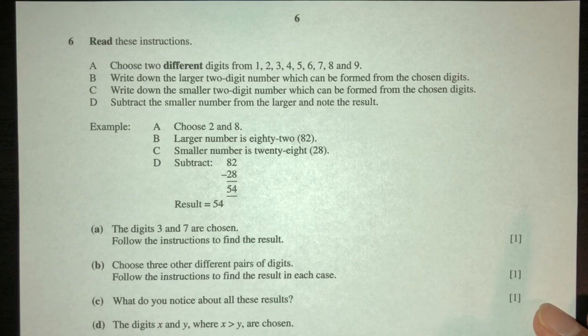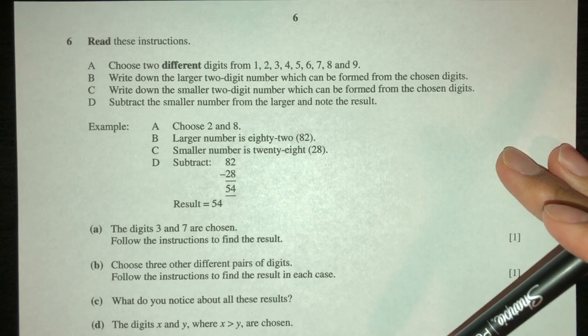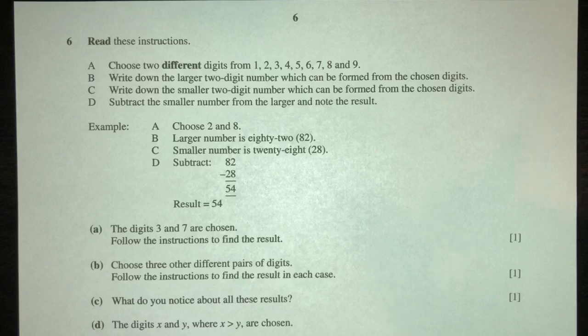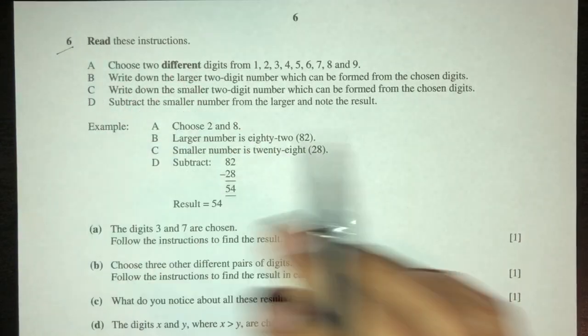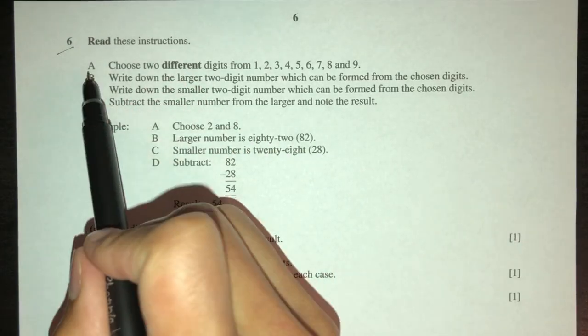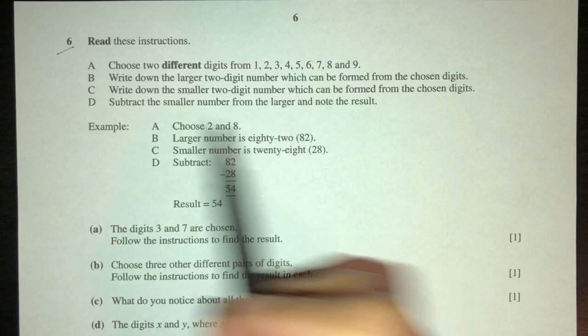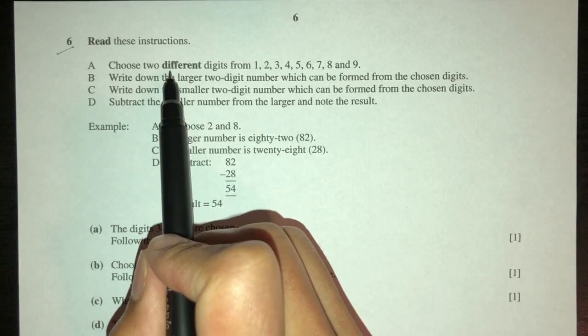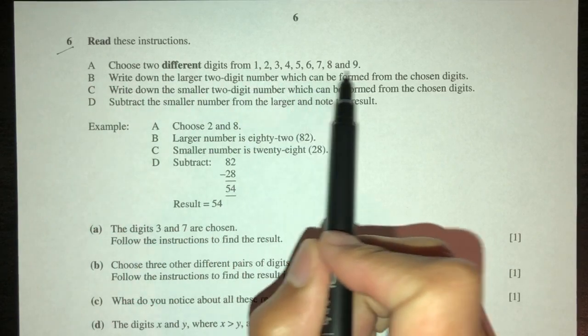Hello, welcome to this video. This one is a requested question from May/June 2005, question number 6 of paper 2. Now it says read these instructions. Part A: choose two different digits from 1 to 9.